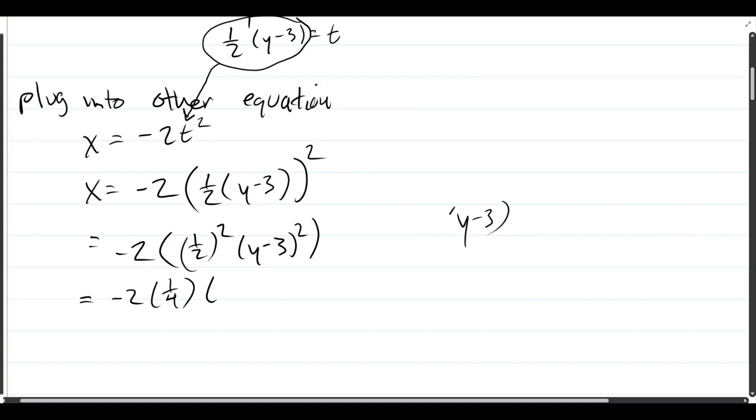to make sure you FOIL it, you're going to get y squared minus 3y minus 3y, which is minus 6y, negative 3, negative 3 is positive 9. And from here, you can do a little cancellation, but there's really not much we can simplify this to.